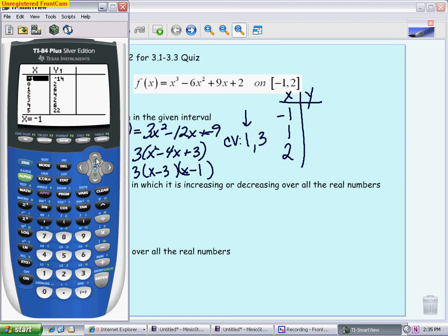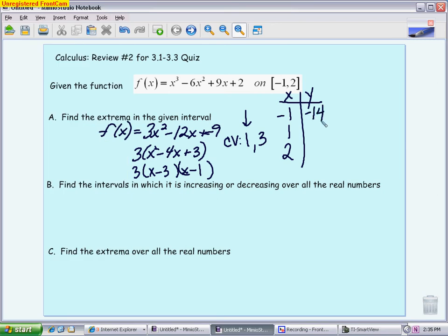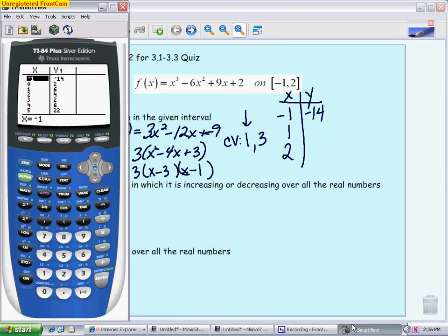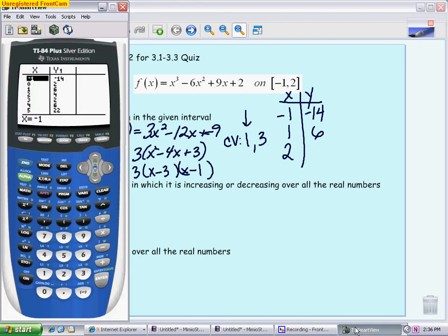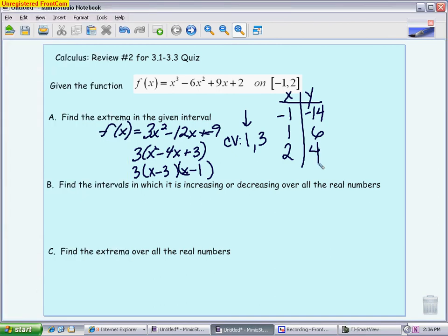I need to know what happens when I put -1 in, positive 1 in, and 2 in, and it's all in my table. When I put -1 in, I get -14. When I put positive 1 in, I get 6. When I put 2 in, I get 4.